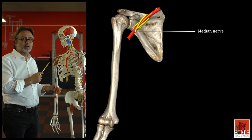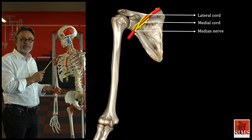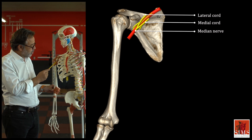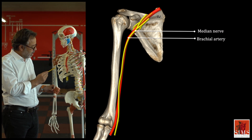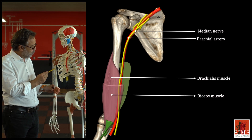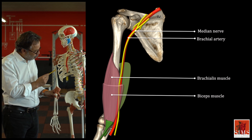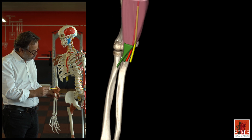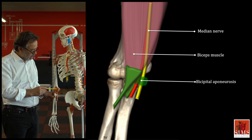The median nerve arises from the junction of the medial branch of the lateral cord and the lateral branch of the medial cord of the brachial plexus, then runs above the brachial artery through the brachial canal adjacent to the biceps and brachialis muscles. It traces the brachial artery along the upper arm to the elbow, where it is protected only by the bicipital aponeurosis.